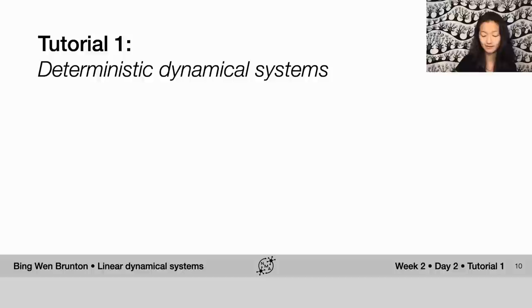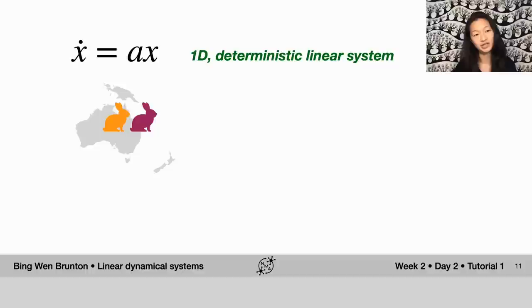And so we're going to be spending some time in this first part of the tutorial looking at this very simple equation, x dot equals ax, which is a one-dimensional deterministic linear system.